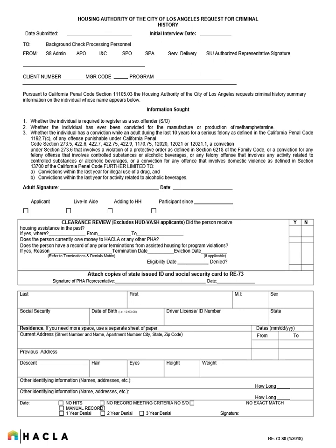The second page of the referral and application is the request for criminal history. Please leave the top section blank as this is for internal PBV staff to complete. You'll want to ensure that each adult member of every household signs and dates their own form and that they indicate their relationship to the household. The clearance review box in the middle and the very last field are also for internal staff to complete. Please leave these blank as well.